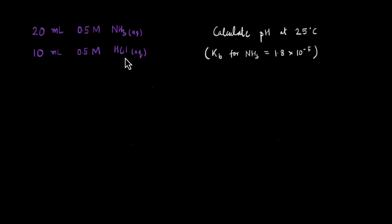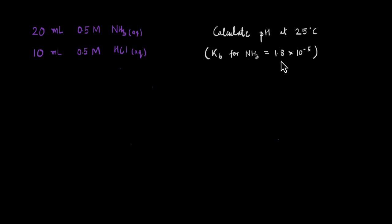Let's go through this problem which is asking us to calculate the pH of this solution at 25°C. The solution is 20 mL of 0.5 molar aqueous NH₃ and 10 mL of 0.5 molar aqueous HCl. It is also given that the base ionization constant for NH₃ is 1.8 × 10⁻⁵. You can pause here and attempt it and I'll go ahead with the solution in a few seconds.